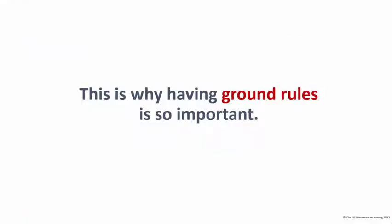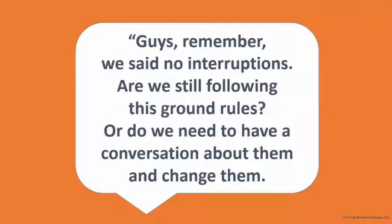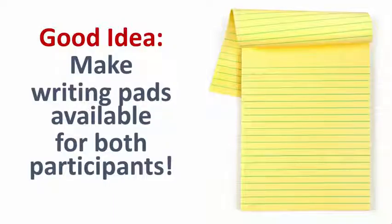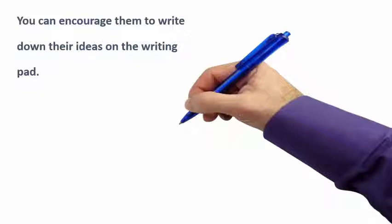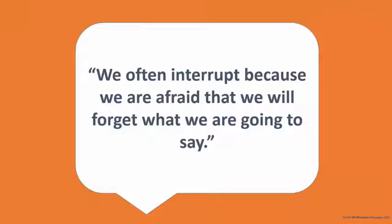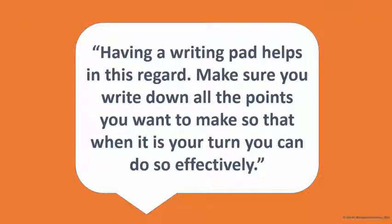This is why having ground rules is so important. You can refer back to them and say, 'Remember we said no interruptions — are we still following this ground rule, or do we need to have a conversation about changing them?' Another good idea that helps with interruptions is to make writing pads available for both participants. Encourage them to write down their ideas, saying something like: 'We often interrupt because we're afraid we'll forget what we want to say — having a writing pad helps. Make sure you write down all the points you want to make so when it's your turn you can do so effectively.'